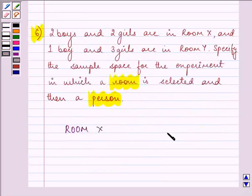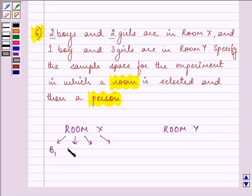So we have room X and room Y. In room X we have four persons, that is two boys and two girls. So let it be B1, B2 and G1 and G2.